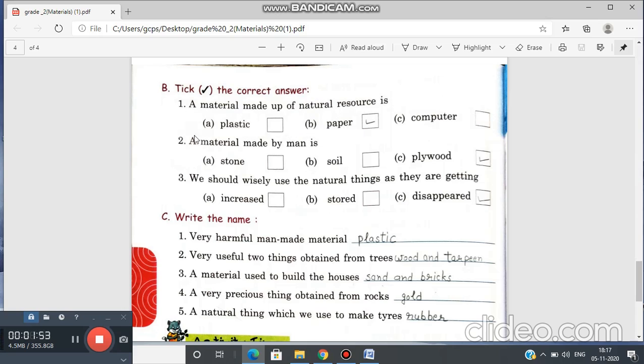A material made by man is stone, soil or plywood. Tell me the answer. Yes. Plywood.